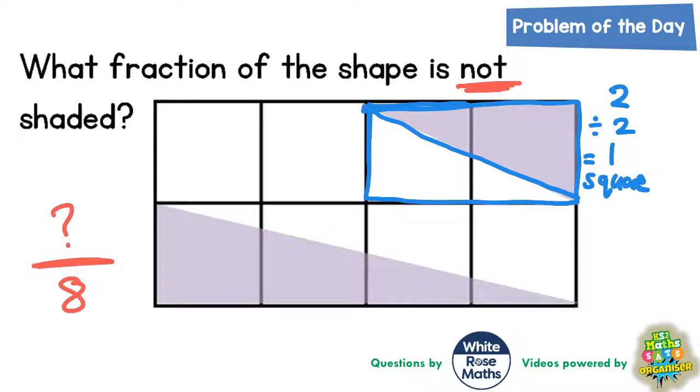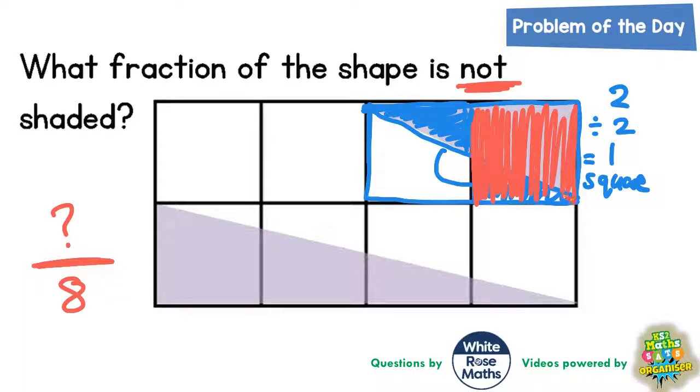So the two grey bits together must equal one square. Another way of thinking about this is if you shade this bit in and turn it round and put it in there, then that would complete your one square that's shaded. So the grey bit on those two squares there adds up to one whole square.